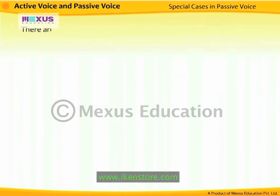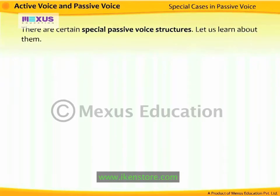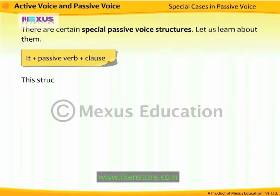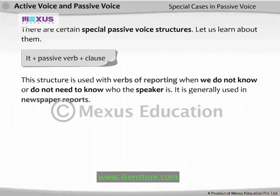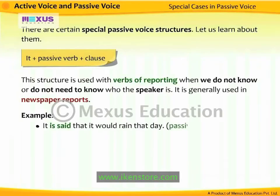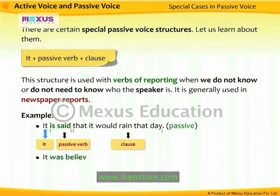There are certain special passive voice structures. 'It + passive verb + clause': this structure is used with verbs of reporting when we do not know, or do not need to know, who the speaker is. It is generally used in newspaper reports. For example: 'It is said that it would rain that day' (passive); 'It was believed that the building had been demolished' (passive).